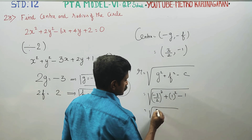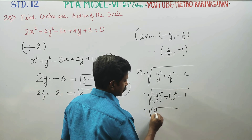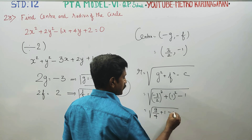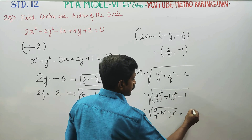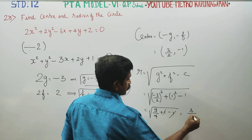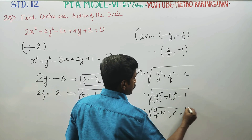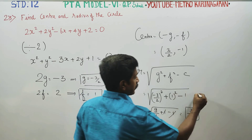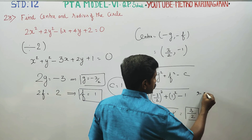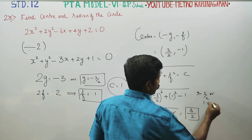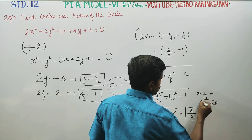3 by 2 squared is 9 by 4, and 1 squared is 1. Minus c which is 1 — this cancels. So the radius is root of 9 by 4, which gives 3 by 2 or 1.5 units. The radius is 3 by 2 or 1.5 units.